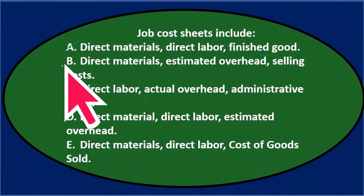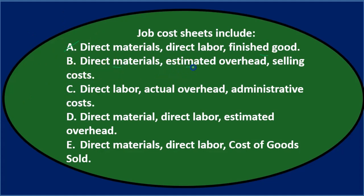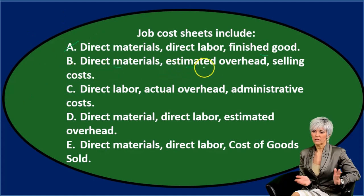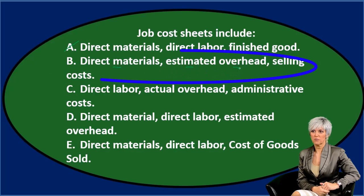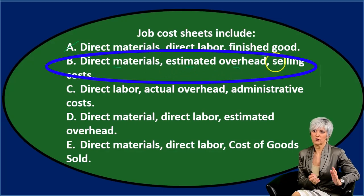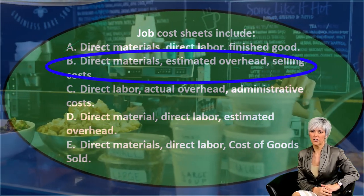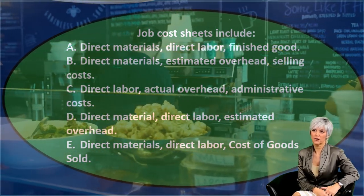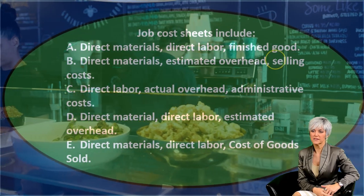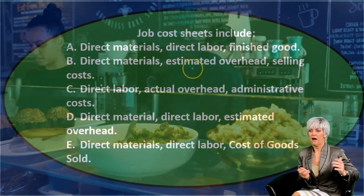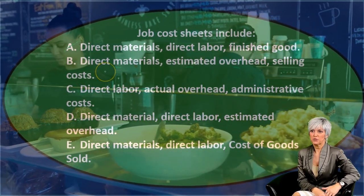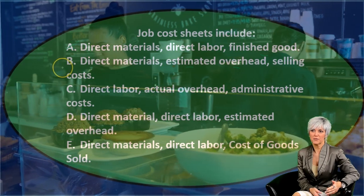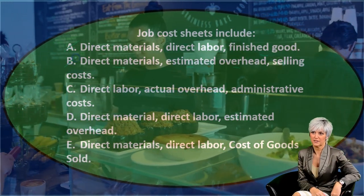The second choice says direct materials, estimated overhead, and selling costs. I'm not sure on this one — overhead possibly would be there. However, selling costs are not on the job cost sheet because those are period costs, not part of the cost of production, which is what the job cost sheet is tracking. So I don't think it's B.